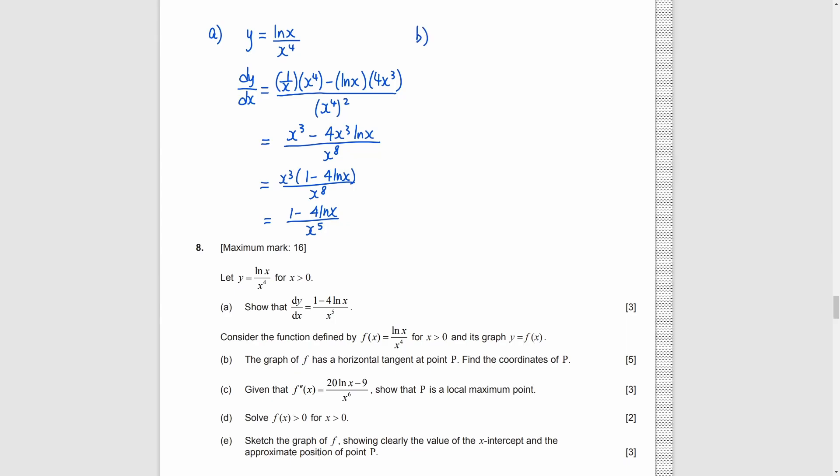Part B, horizontal tangent means that the slope at that point is 0. So, we set the derivative of f to be 0. After simplifying it, we get natural log x equals 1 fourth. So, x is e to the power 1 fourth. Then, we substitute it back to f. And we get y equals 1 over 4e.